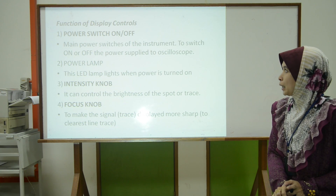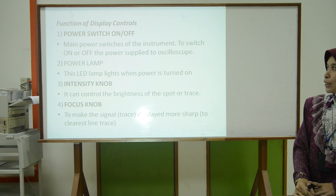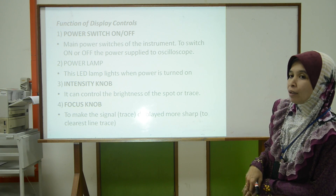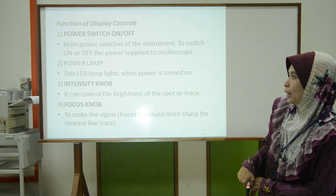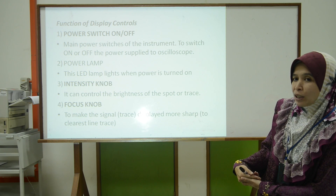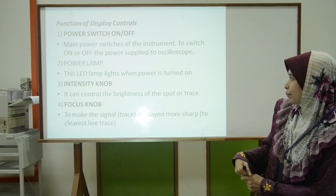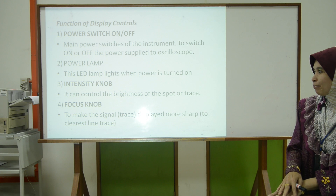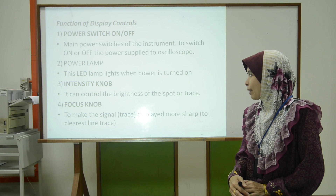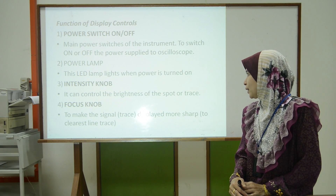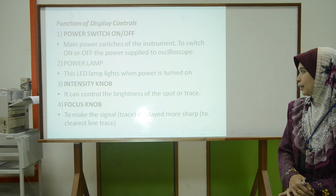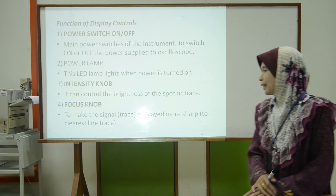The function of the display control: the main power switch turns the oscilloscope on or off. The power light illuminates when power is on. The intensity knob controls the brightness of the spot or trace. The focus knob makes the signal or trace display sharper and clearer.